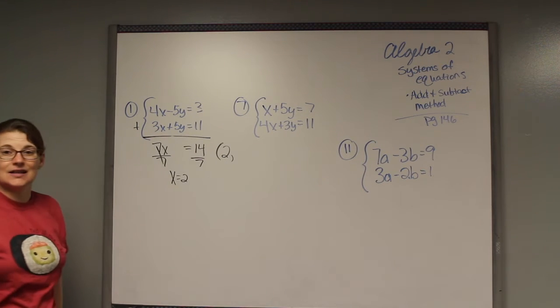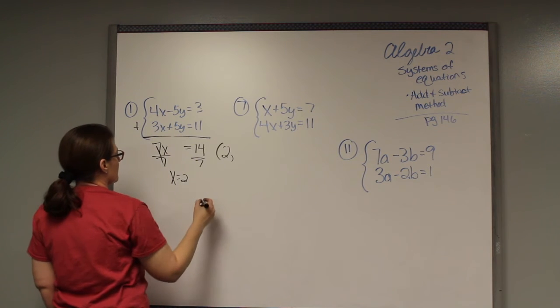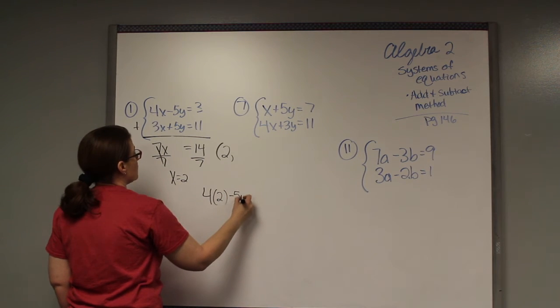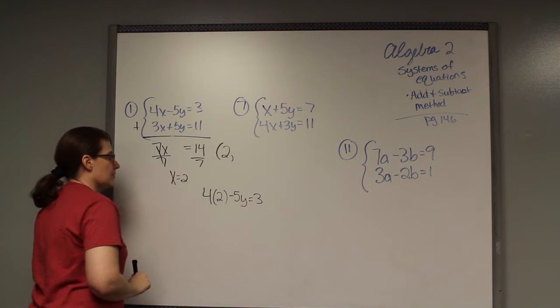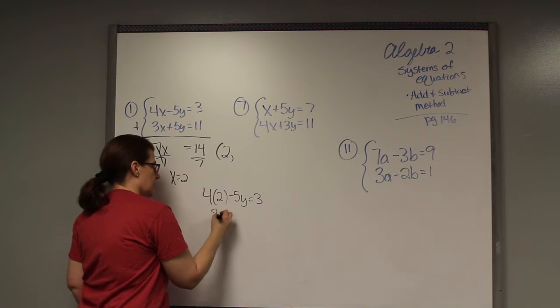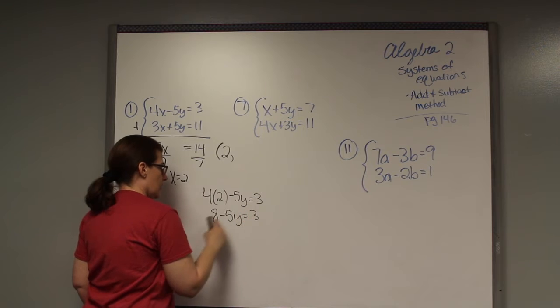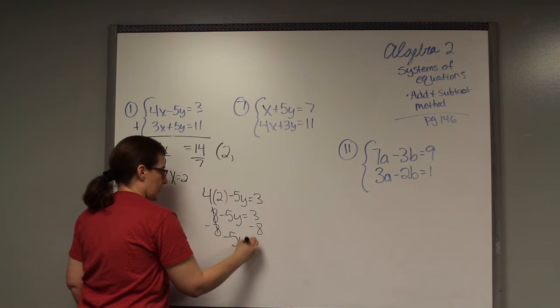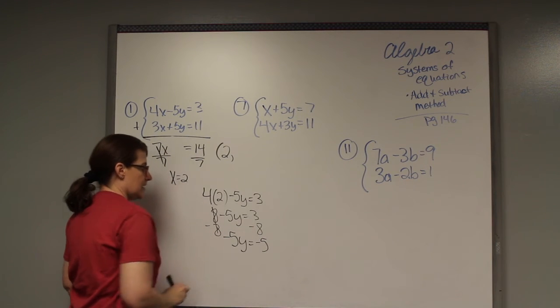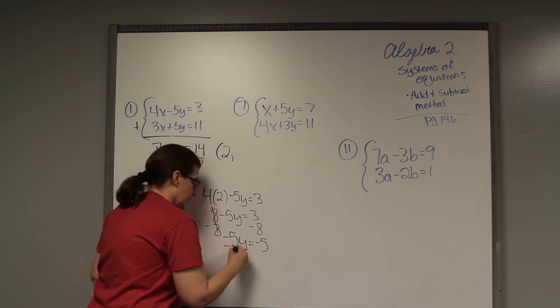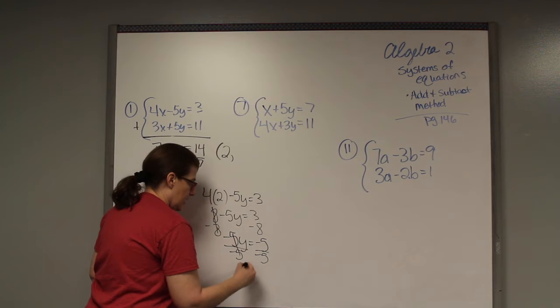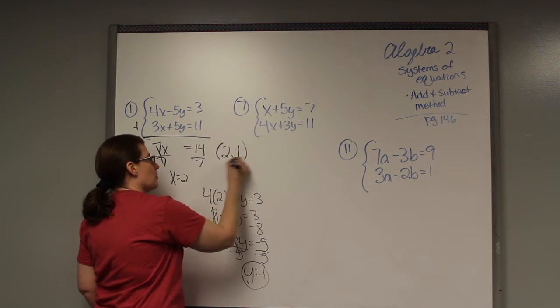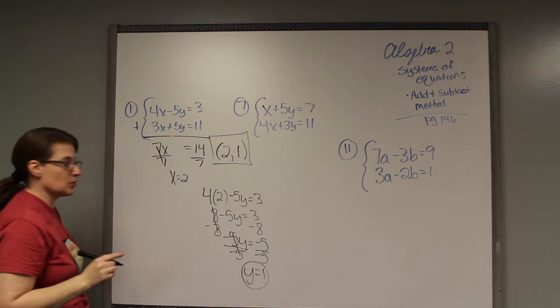Now I'm going to take one of these equations and put the 2 back in for x and solve for the y. I'm going to pick the top one. 4 times 2 is 8. 8 minus 5y equals 3. I'm going to move my 8 over by subtracting it. I get negative 5y equals negative 5. Divide both sides by negative 5, and y will equal a positive 1. So that is my other part of my answer, and this is the pair that I was looking for.